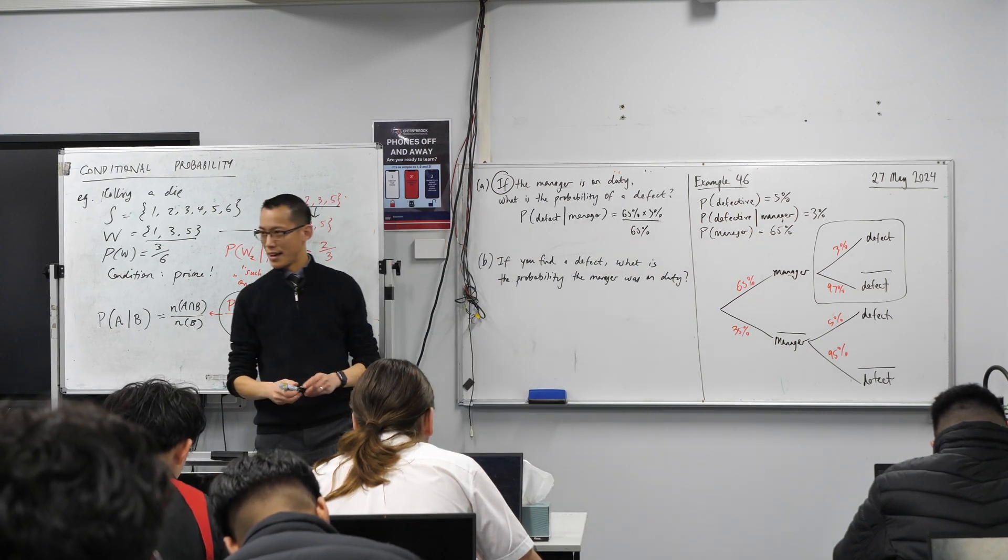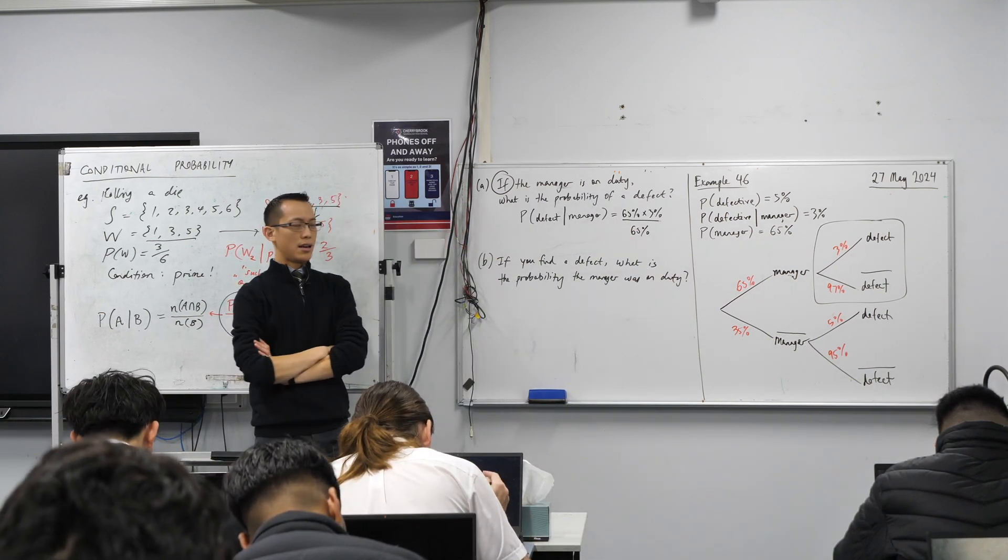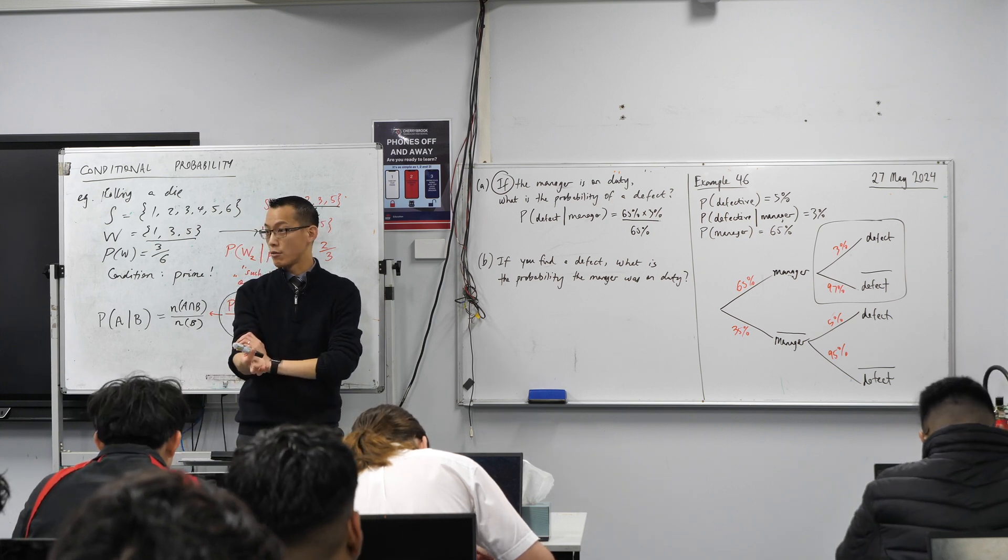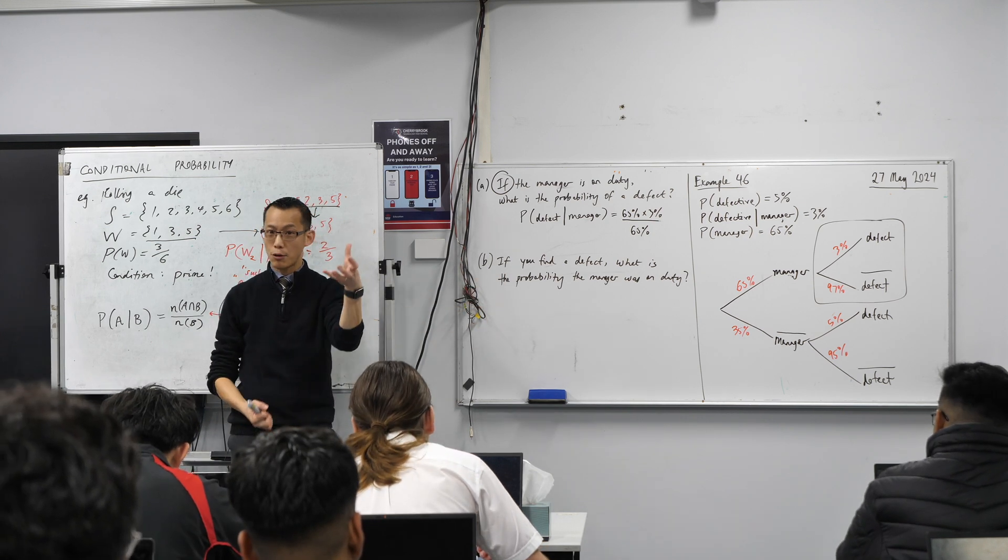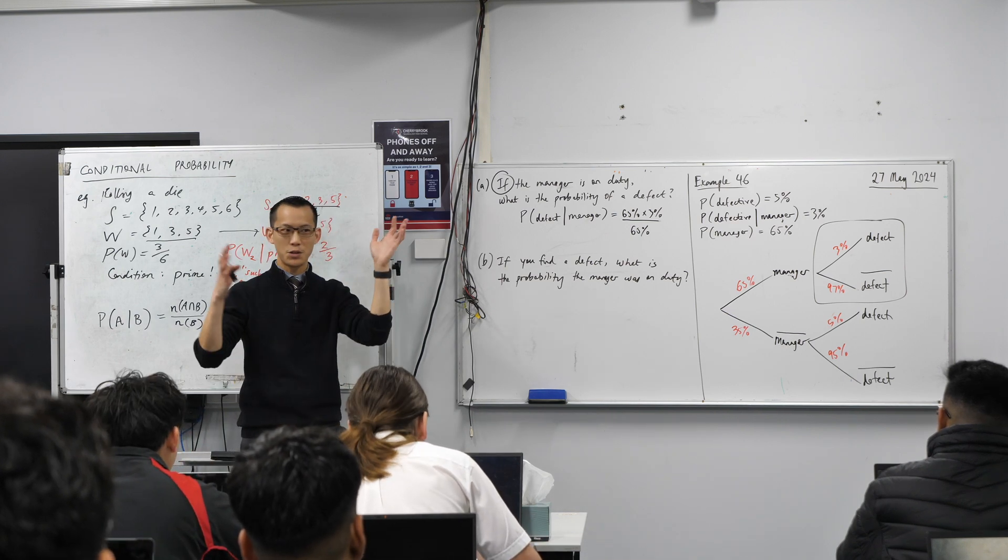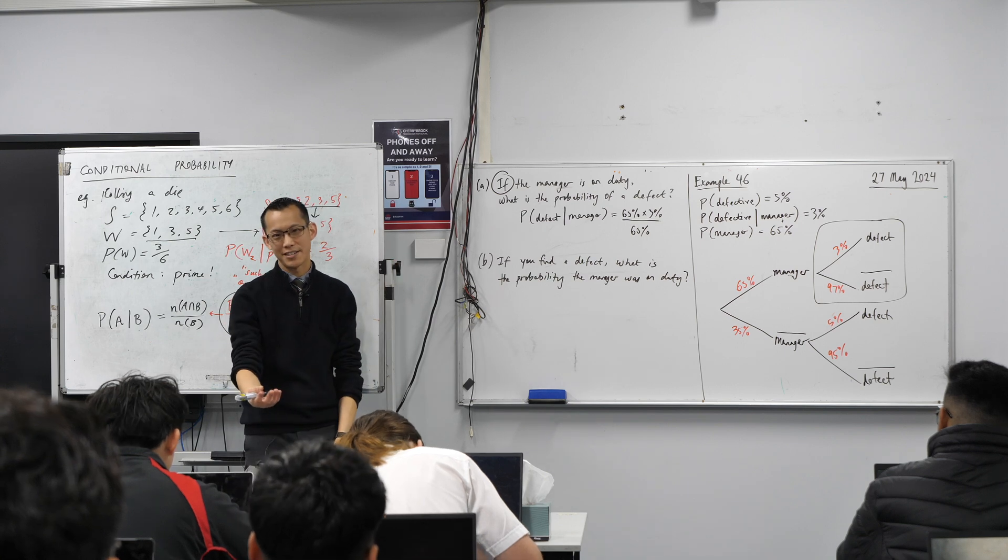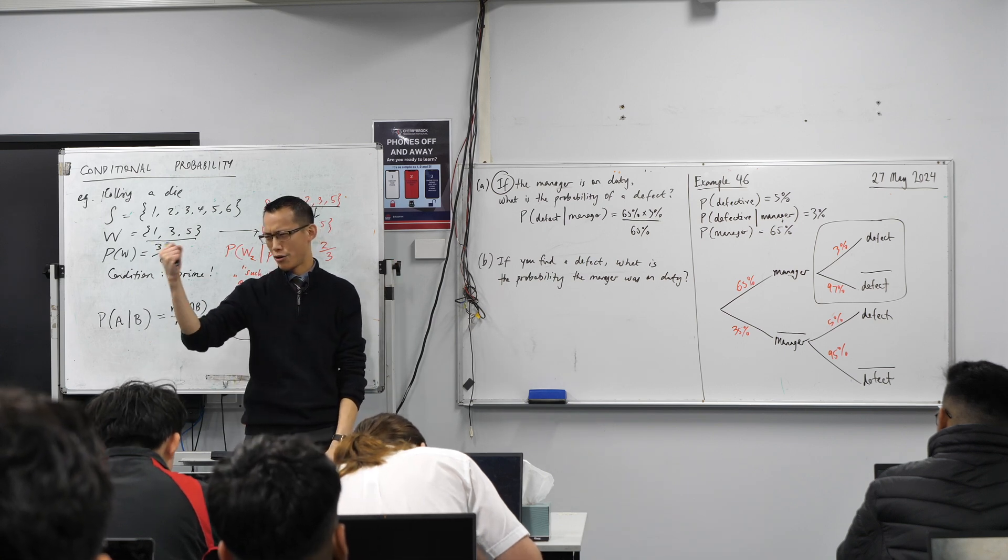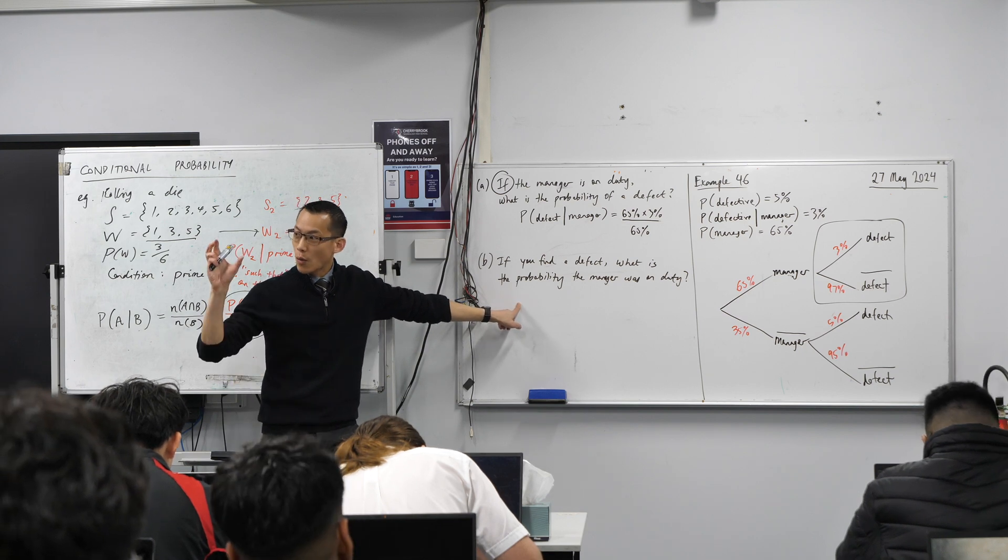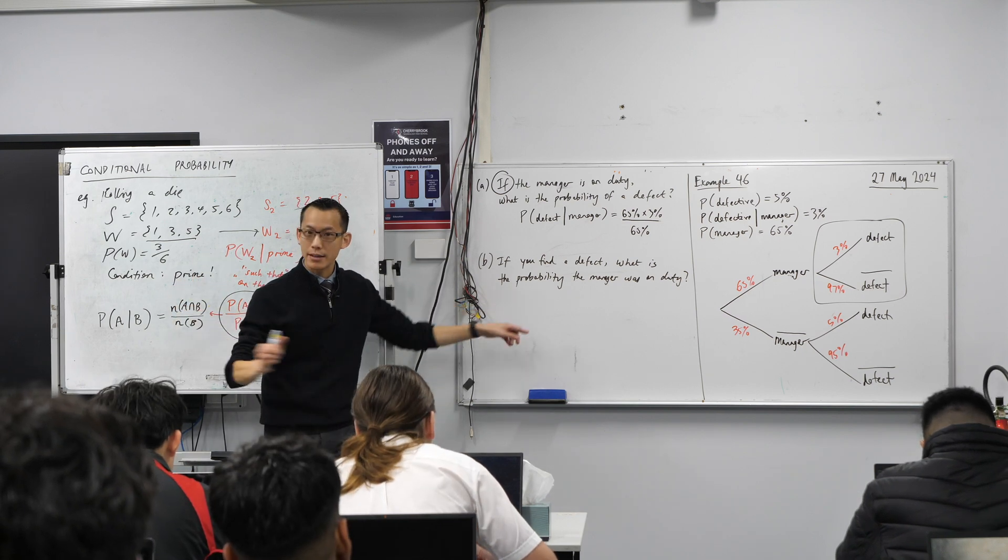This part here though, this starts to get trickier. You find a defect. So we don't even know. We're not in the factory, right? We just pull the light bulb out. It's not working, which actually happened to me four weeks ago. I moved to a new house, buy a new light bulb. I'm going back to Bunnings, but I want to know answers, right? What's the probability that the manager's on duty when this particular light bulb was made?